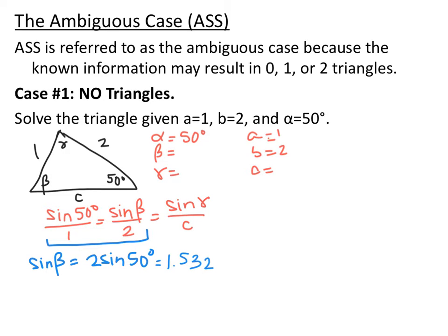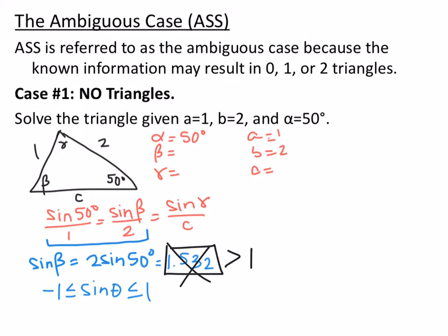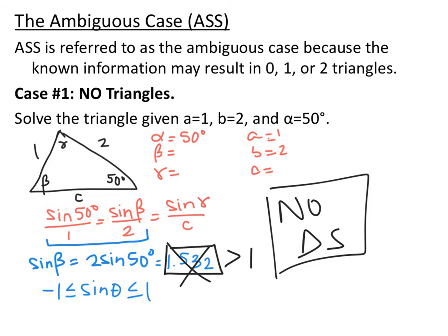You should have gotten 1.532. So sine of beta equals approximately 1.532. The range of sine is negative 1 to 1, and we got something outside of that — that's not possible. So this triangle is not possible. This is greater than 1, which you can't have, so for this example we have no triangles. If you try to take the inverse sine, your calculator will give an error, which also tells you there are no triangles.